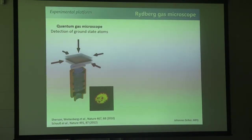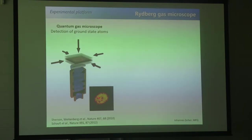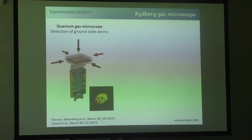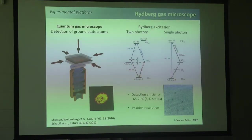The setup is a quantum gas microscope. In a nutshell, we first prepare a two-dimensional sample of rubidium-87. We typically prepare a Mott insulator. To get information on the system, we freeze it, freeze the density, shine fluorescence light, and pick up the fluorescence with a high-resolution objective. By that we get information on the local occupation of the lattice. In all of our experiments the Mott insulator is the starting state, and we use this fluorescence detection combined with Rydberg excitation.